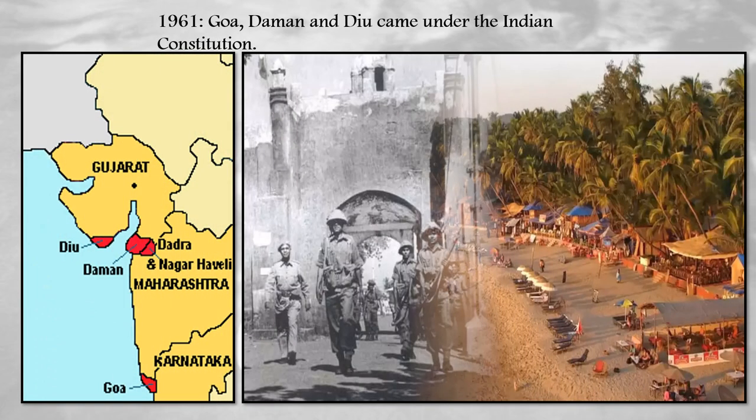Goa, Daman and Diu, situated on the coast of the Arabian Sea, were under Portuguese rule for over 400 years until 1961. In 1961, the Indian government conducted a military invasion in Goa, Daman and Diu to free them from Portuguese rule.